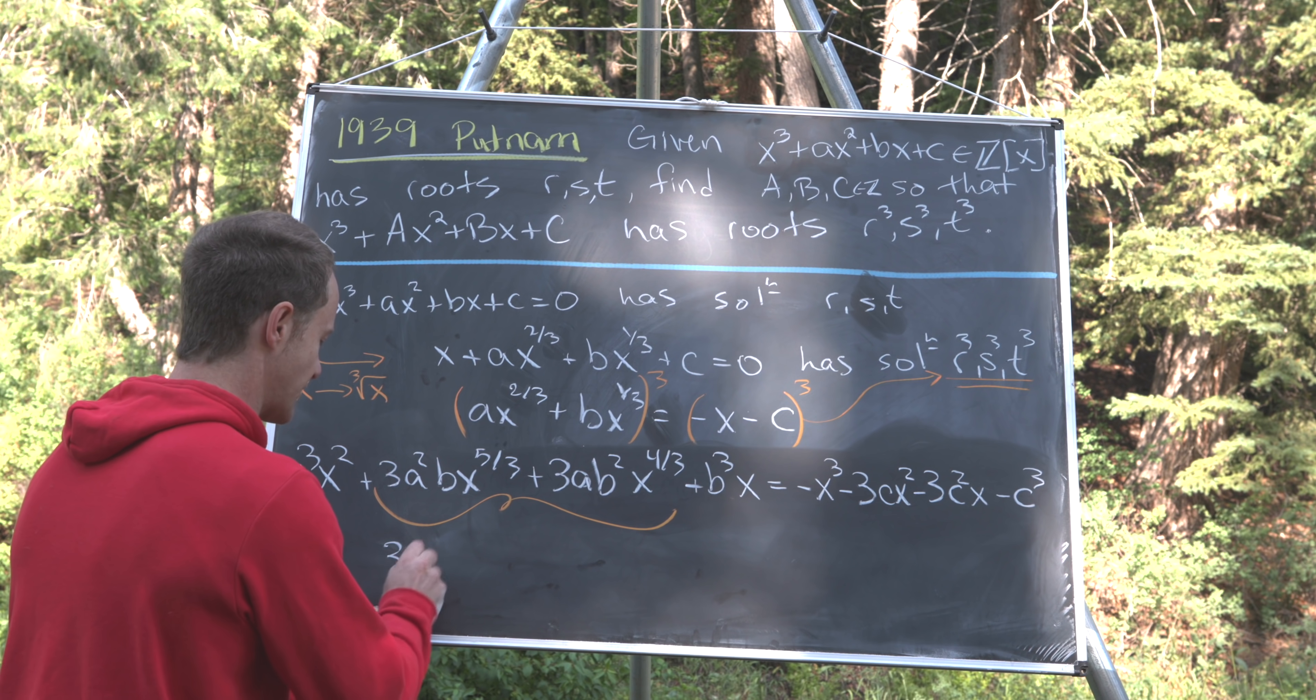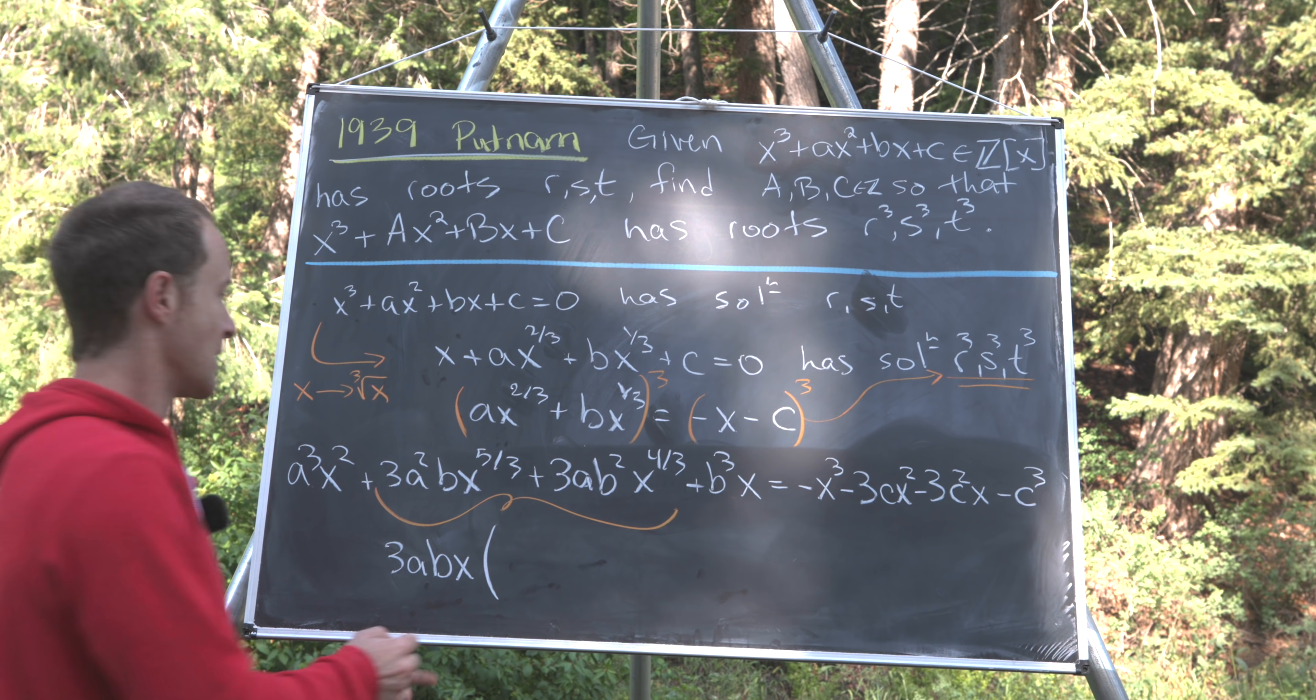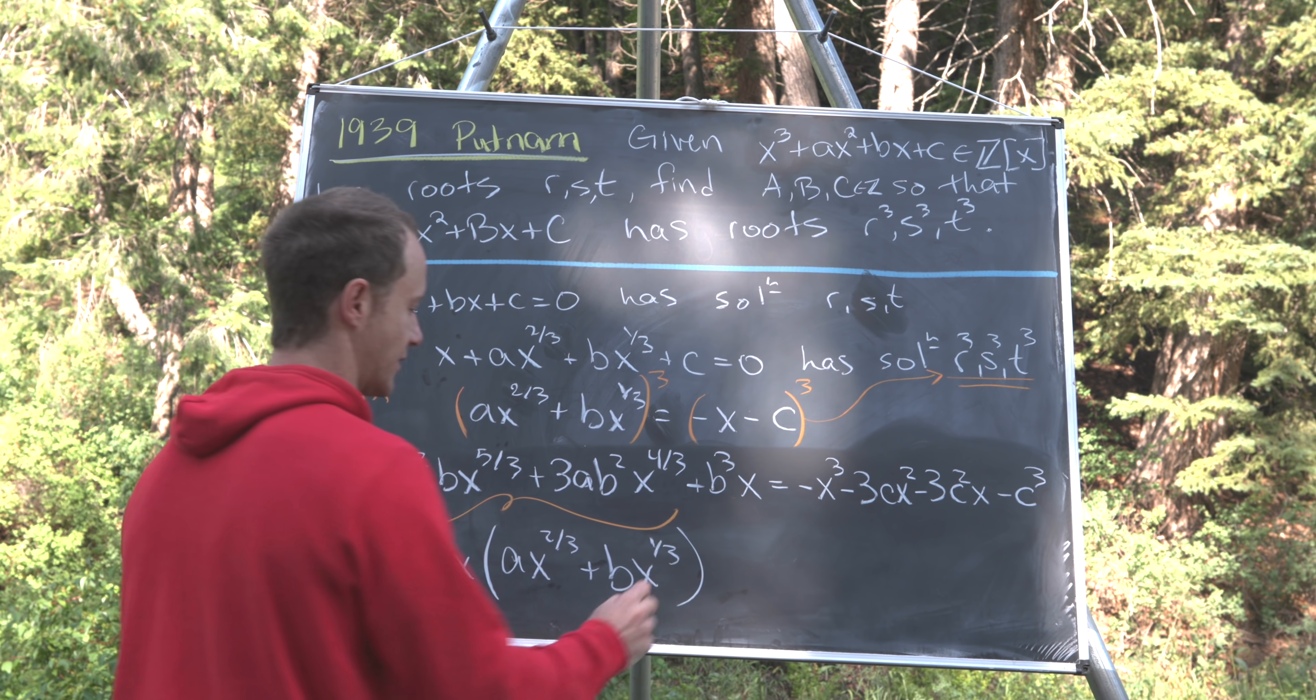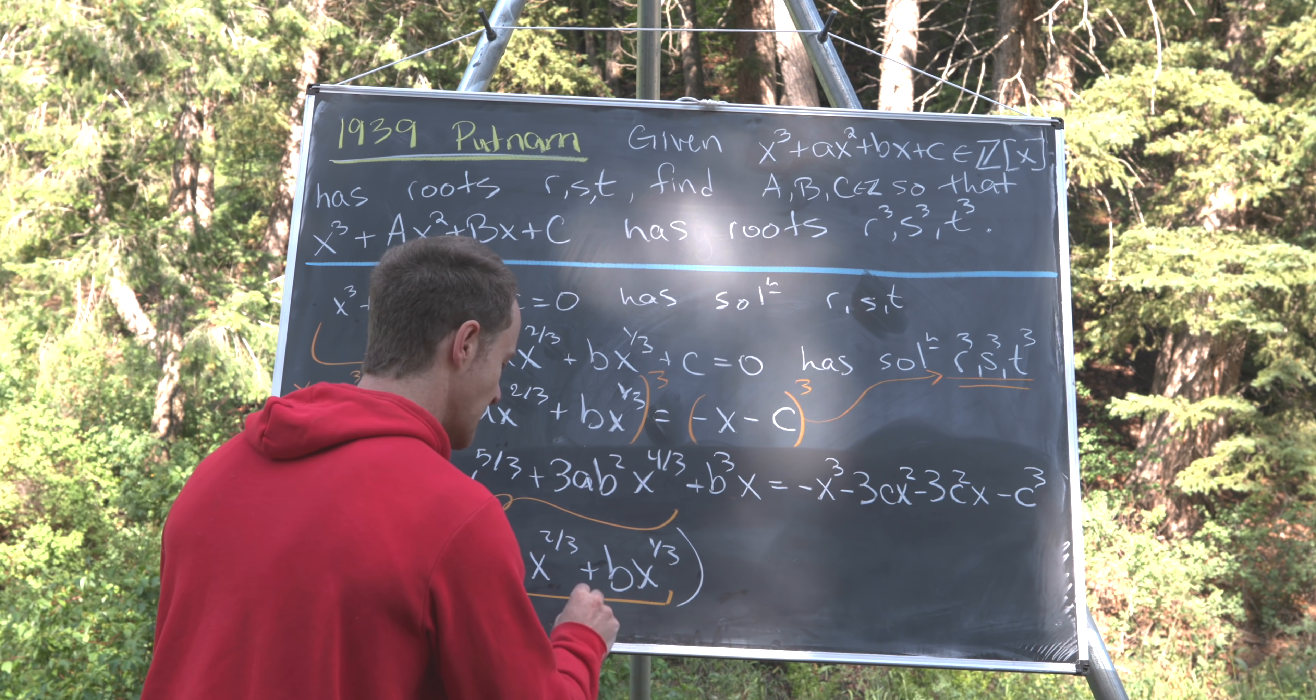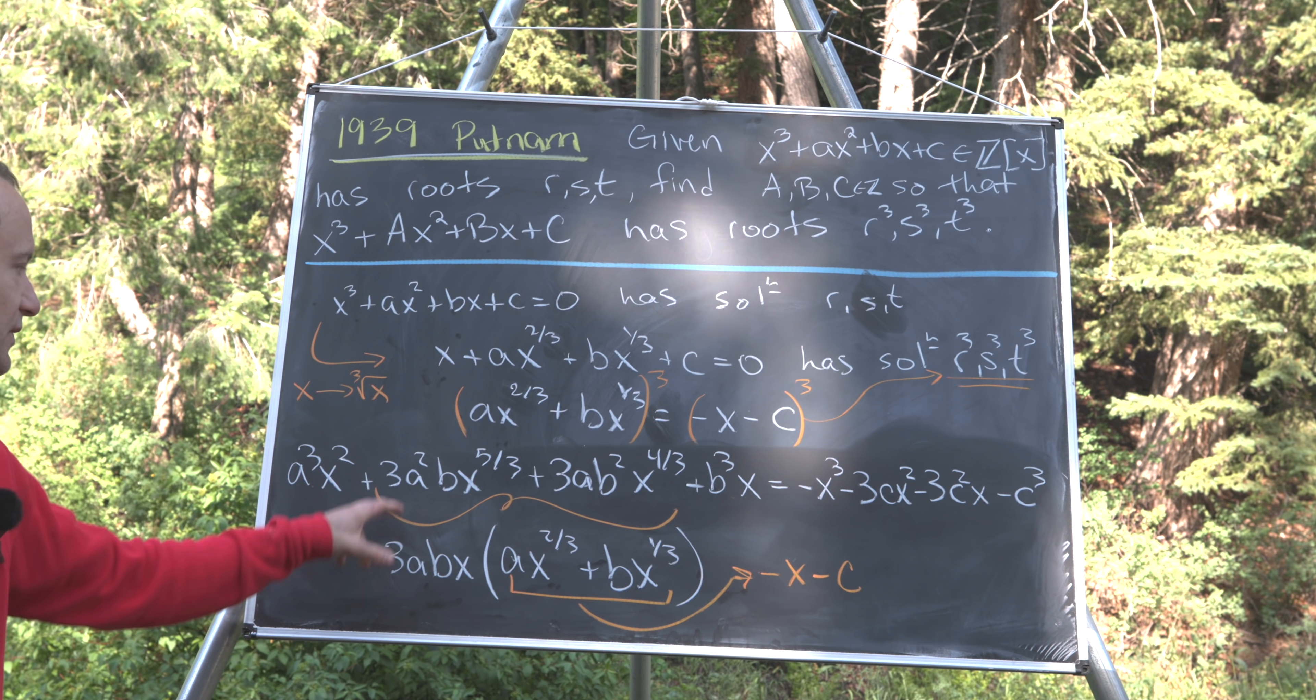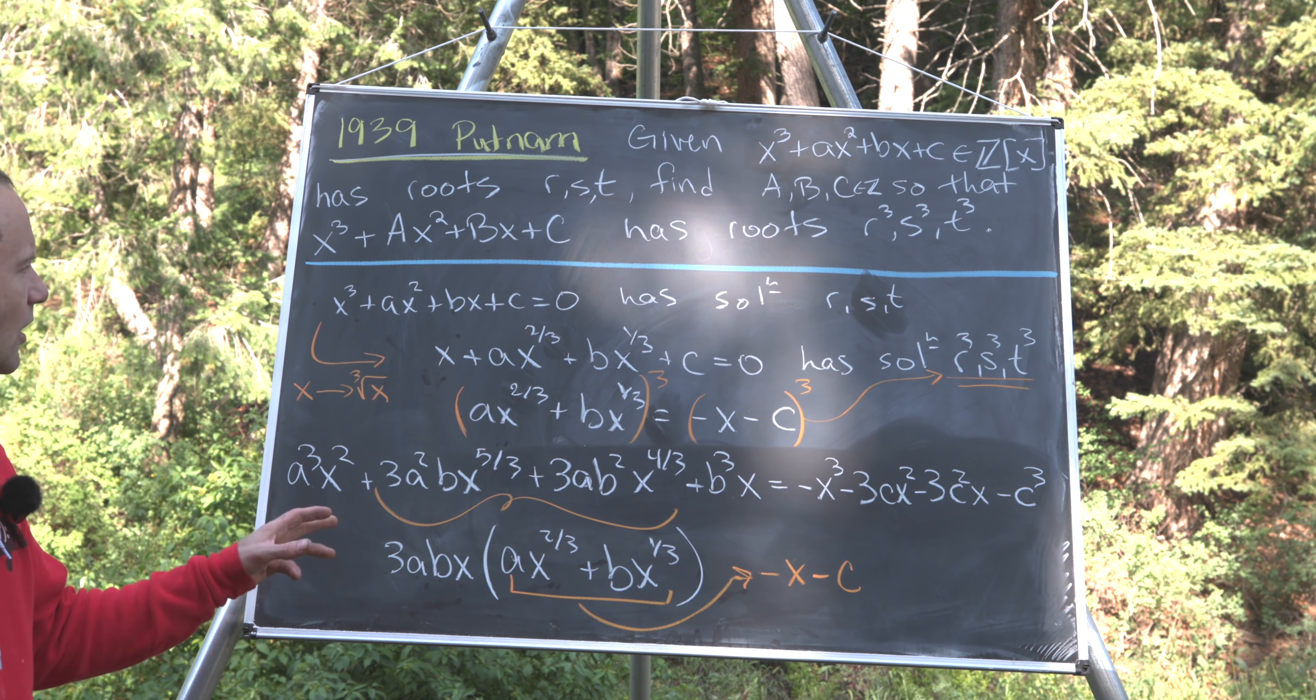But we'll see that we can simplify those. So let's first factor some stuff out. So we can factor 3ab times x out of this. But if we do that, we're left with a times x^(2/3) + b times x^(1/3). And that's actually really good news because from this step up here, we see that this object is equal to -x - c. So that means we can replace all of this right here with 3 times a times b times x times (-x - c). Okay, so let's maybe get rid of this and we'll start at that point.